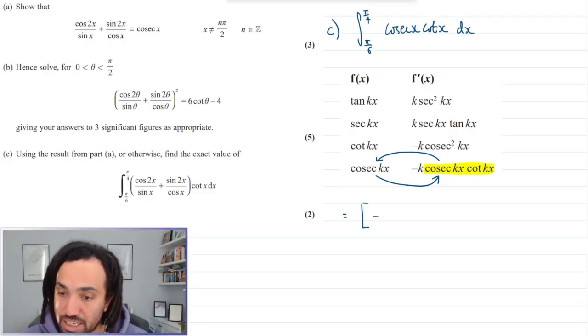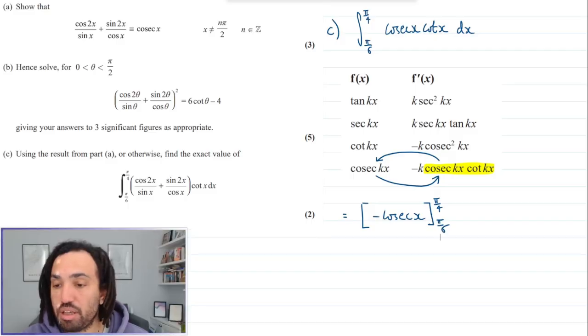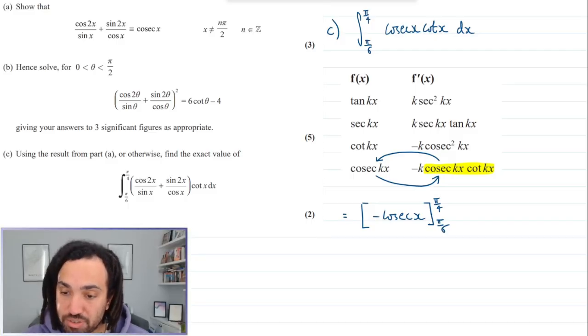I could say that if minus cosec cot integrates to cosec, then positive cosec cot must integrate to negative cosec. So in fact when I integrate this I get negative cosec x, and that is again between pi over 4 and pi over 6. What is negative cosec x? That is of course negative 1 over sine x, pi over 4 and pi over 6.